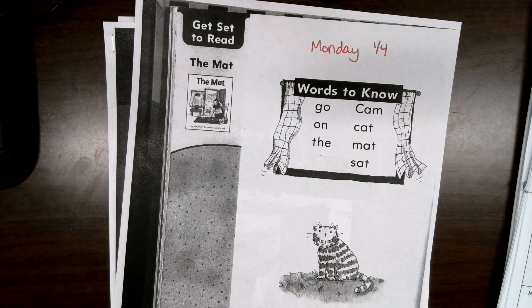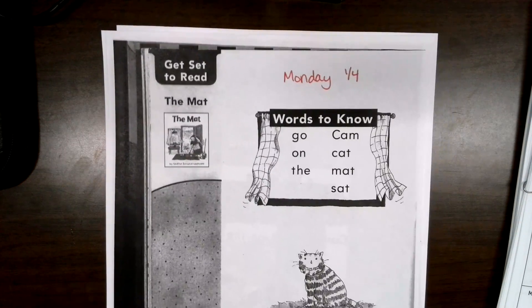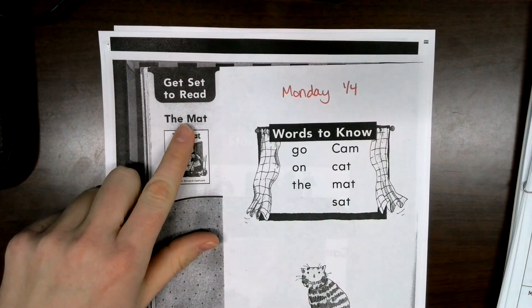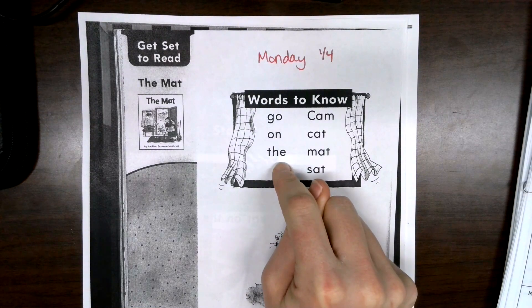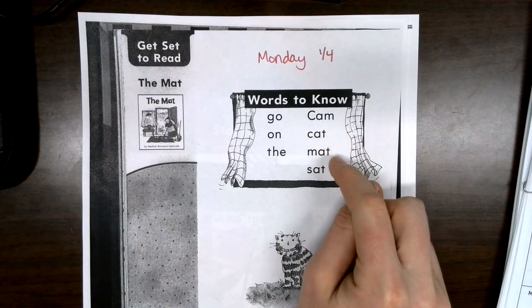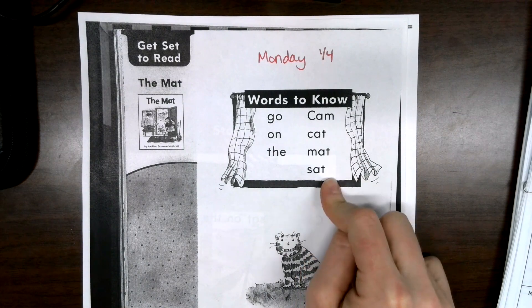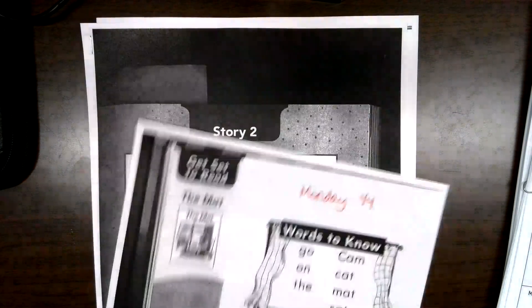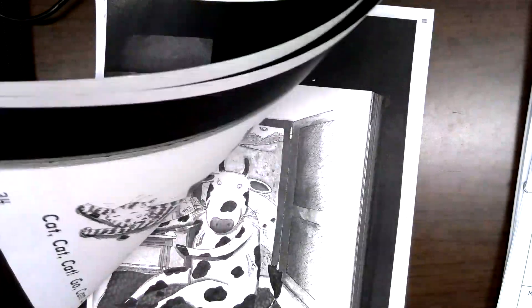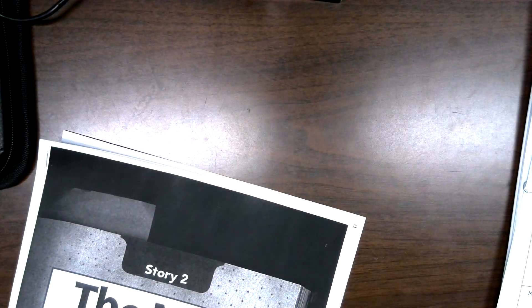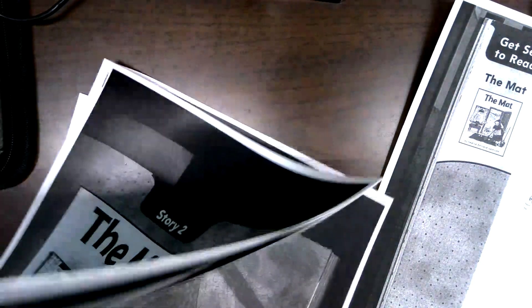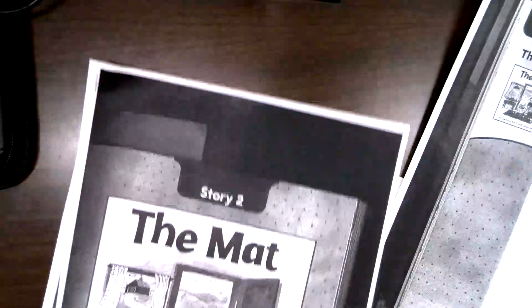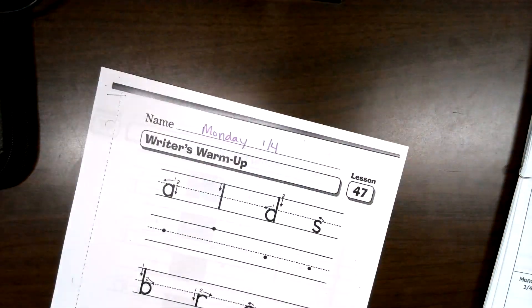Now once you finish that, you have this story called The Mat in your book. Here are the words to know. We have go, on, the, Cam, cat, mat, sat. And you're going to read this story. Okay? And let me see if there's any questions. I can't remember. No questions today, but read this story by yourself or to someone else. Pause video here, do that, hit play when you're ready to move on.